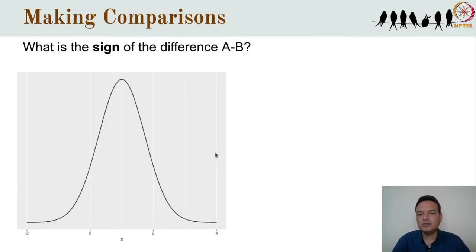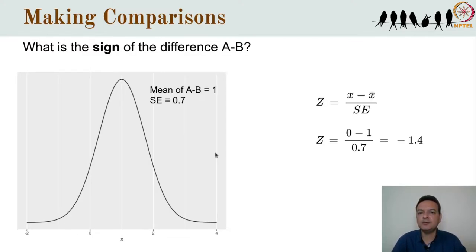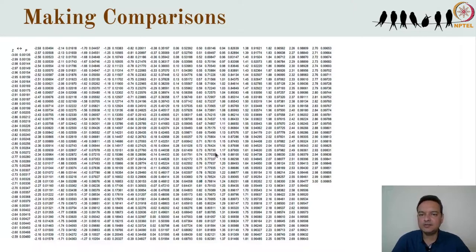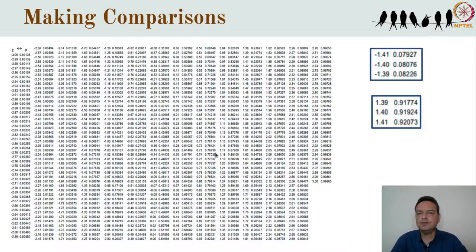Or we can do this from the properties of the normal distribution using a z-table. In this example the mean is 1 and the standard error is 0.7. We use the familiar formula to get the z-score and see that 0 is 1.4 standard errors to the left of the mean. Looking up a z-table, a z-score of minus 1.4 corresponds to an area of 0.08, or 8%, to the left. In other words, minus 1.40 is at the 0.08 quantile.